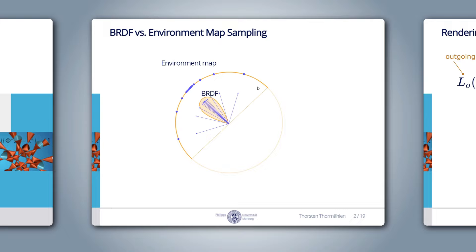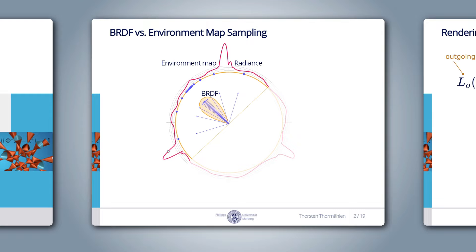This works fine as long as the radiance values in the environment map do not contain high frequencies. For example, the red curve specifies the radiance values and currently we get a little bit of radiance from everywhere. However, if the environment map contains high frequencies such as small bright light sources, this will produce problems. When we perform importance sampling with respect to the BRDF, we might not hit the location of the bright light sources. Sometimes we hit these bright locations, sometimes not, and this produces a lot of noise in the output.